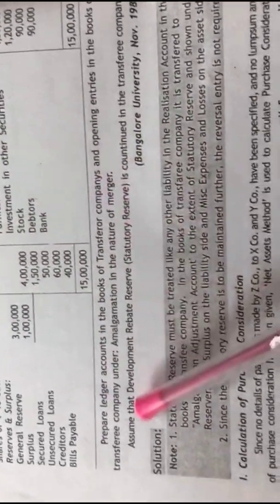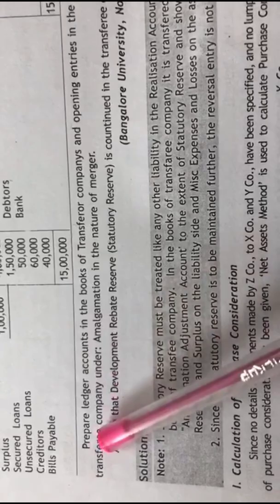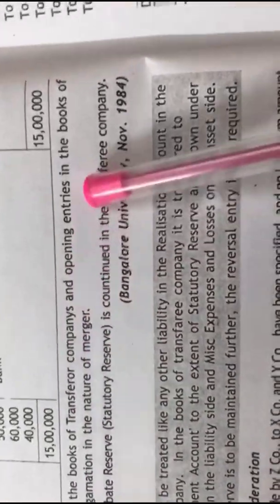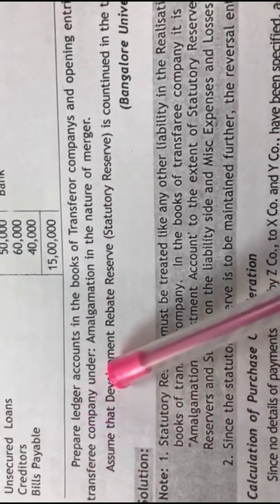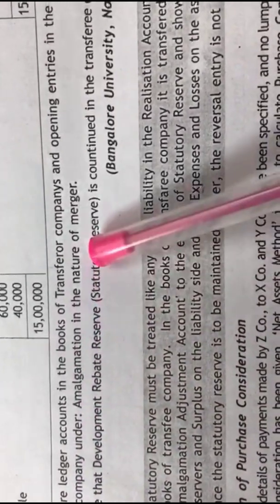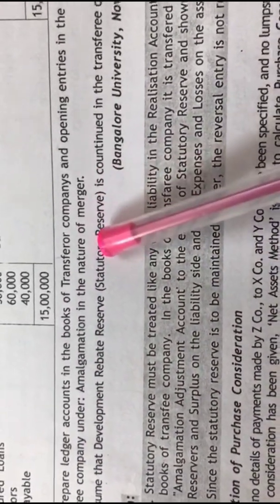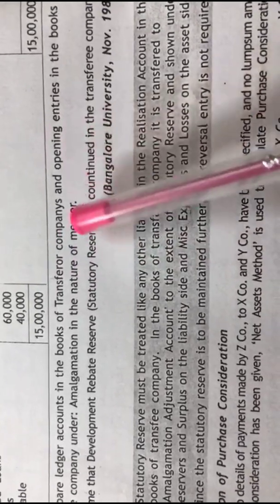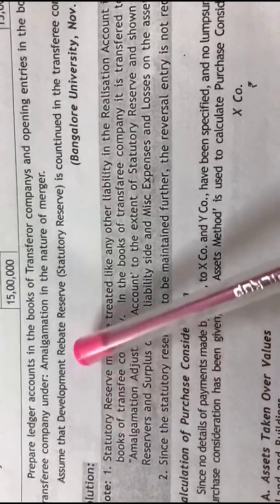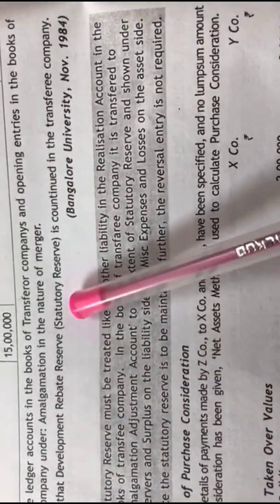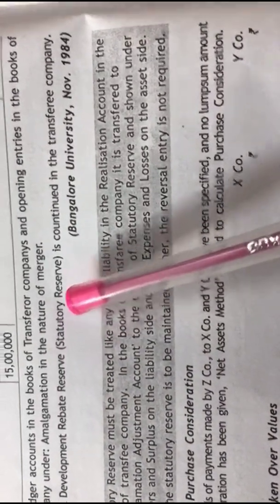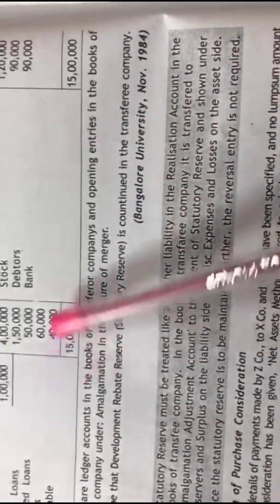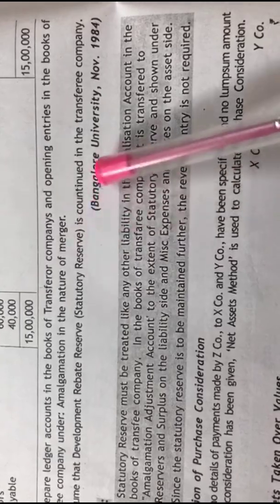This is a simple problem. We have to prepare ledger accounts in the books of the transferor companies and opening entries in the books of the transferee company under amalgamation in the nature of merger. Assume that development rebate reserve — which is a statutory reserve — is continued in the transferee company. These are the only adjustments given in the problem.